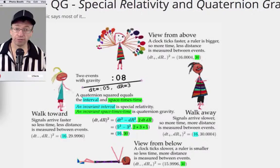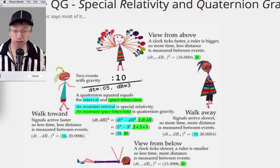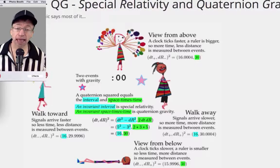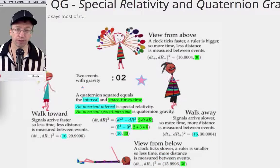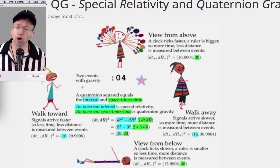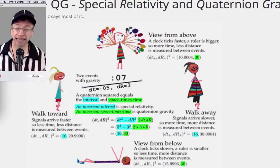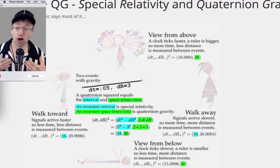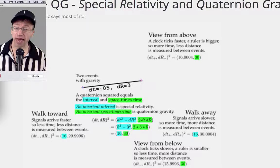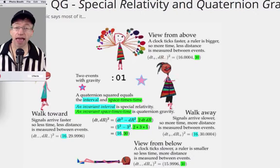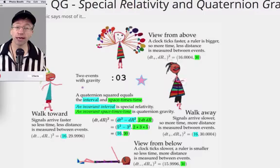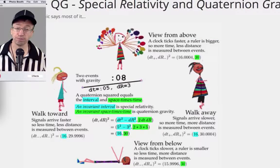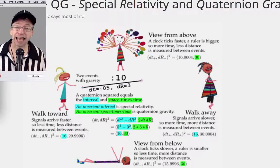The kids walking don't agree with the kids above and below about anything — the intervals are different and the space-times-time is different. But that's okay. What matters is the different agreements the kids make with the reference observer: the walkers agree about the interval — that is special relativity — and the kids above and below agree about space-times-time — that is my quaternion gravity proposal. And that's it for this pagecast. Thank you.